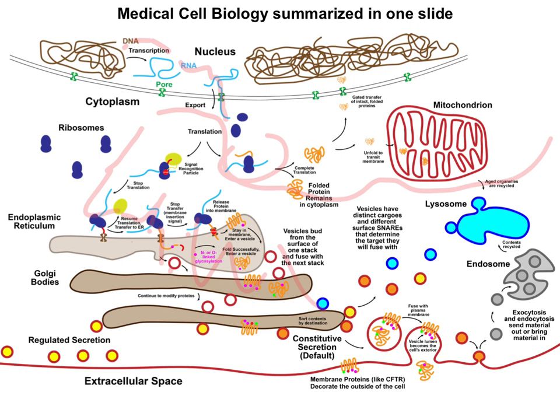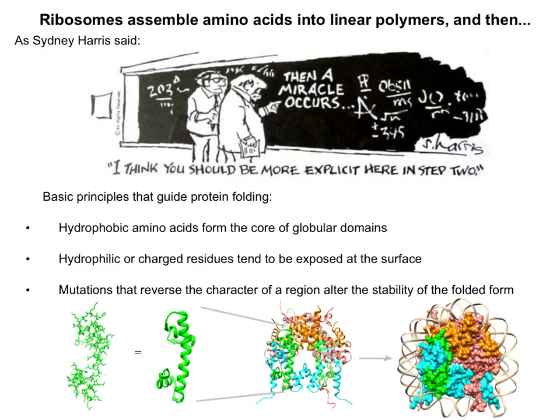So what happens to those proteins after that? The process of making a linear polymer — the protein — is only the first step. We've got this series of amino acids, and then they have to fold up into secondary structures, tertiary structures, and quaternary structures in order to do their job. How does that work?